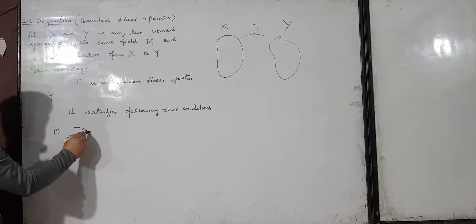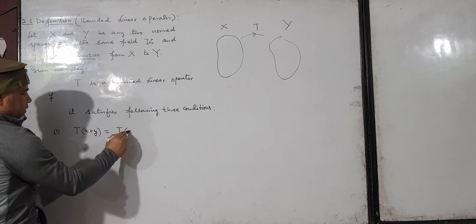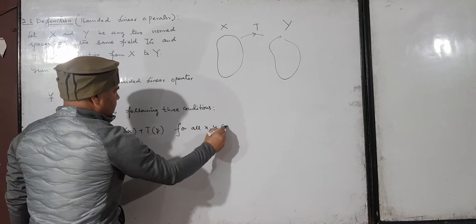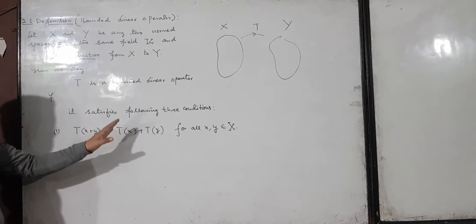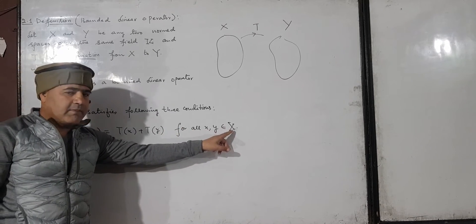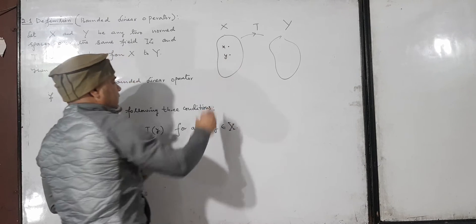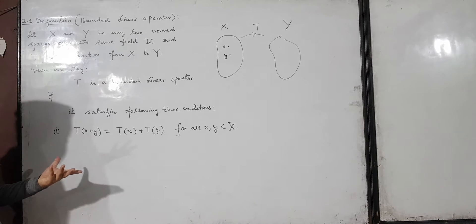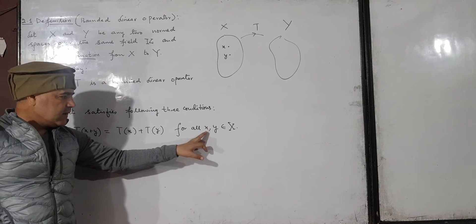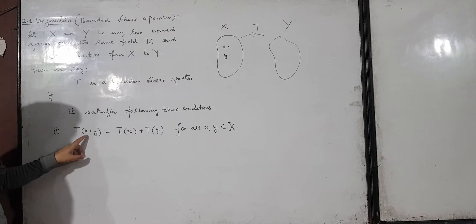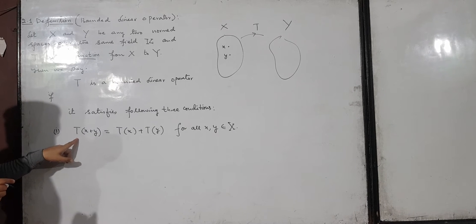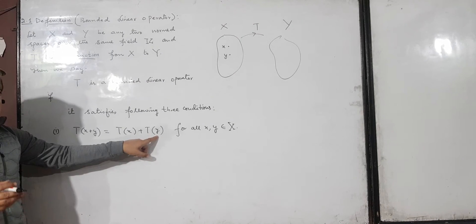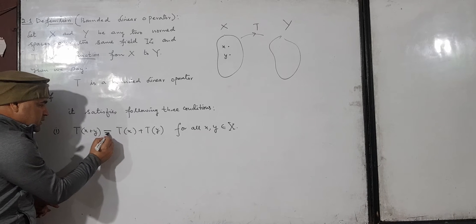T(x + y) = T(x) + T(y) for all x, y in X. What this first condition says is: whenever you pick any two elements x and y from X, then either you add them first and then take the image under T, or you take the images of x and y first under T and then add. In both cases, the answer remains the same.